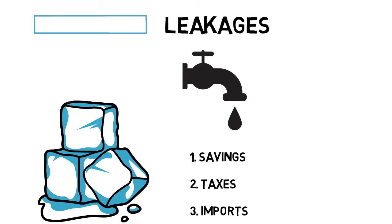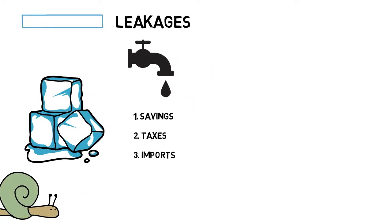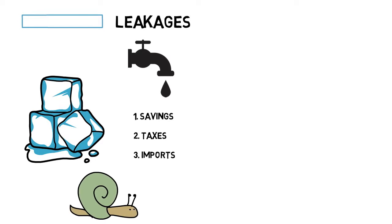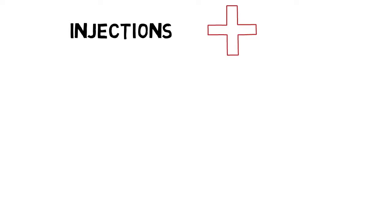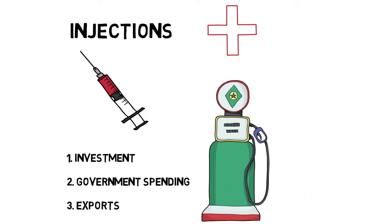All three will leak money out of the circular flow, and this will lead to a slowing down of the economy. If we have a large proportion of leakages, we tend to have economic activity which is slowing down. On the other side, we have injections into the economy — money that is pumped in to kick-start it. We have three elements here: investment from firms, government spending, and exports in terms of trade, which brings money into the country.